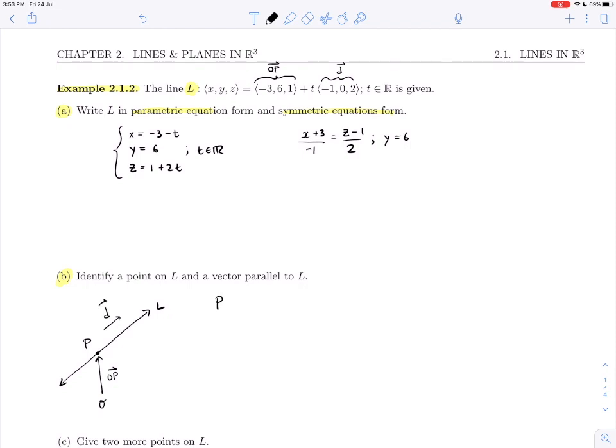Our point P is given by its position vector as (-3, 6, 1), and we can see the direction vector D as (-1, 0, 2).